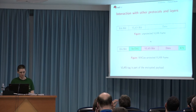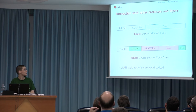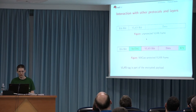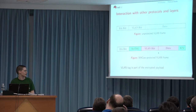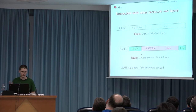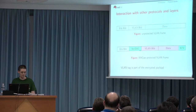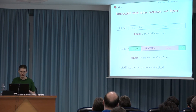One possible interaction between MACsec and other protocols is with VLANs. If you have a VLAN frame and want to encrypt it with MACsec, that's possible — the VLAN header would also be covered by MACsec. You could also transmit this frame through another VLAN, but that outer VLAN header would not be protected by MACsec.